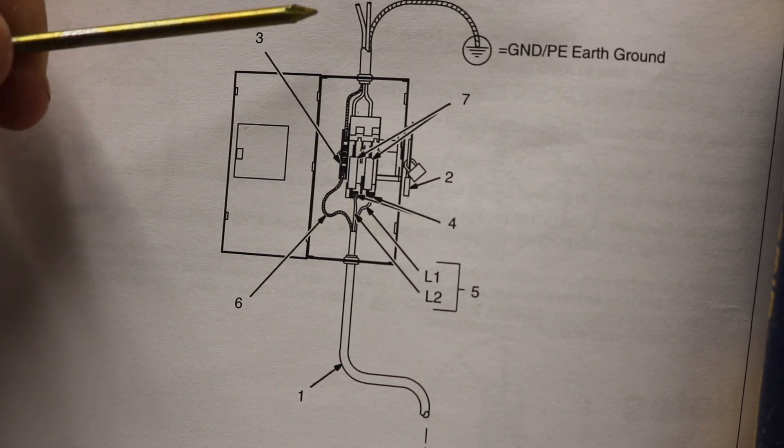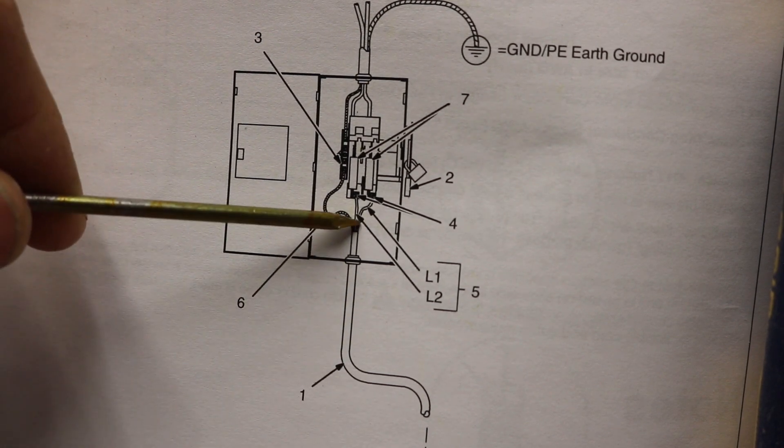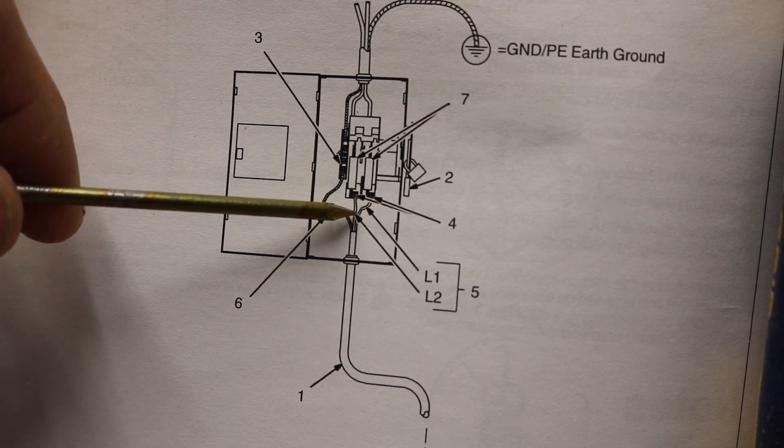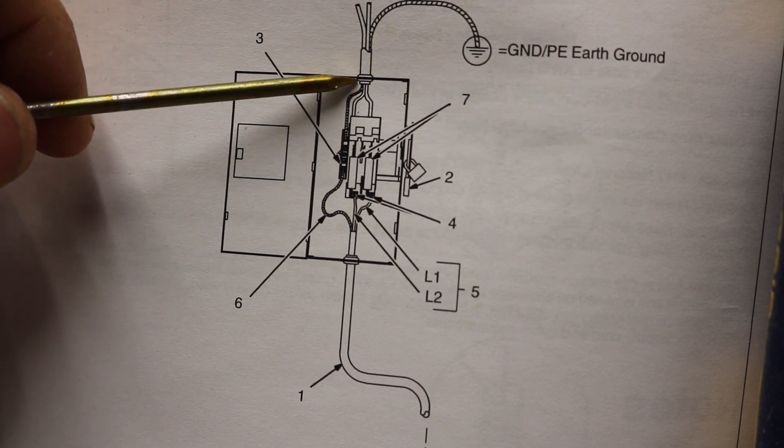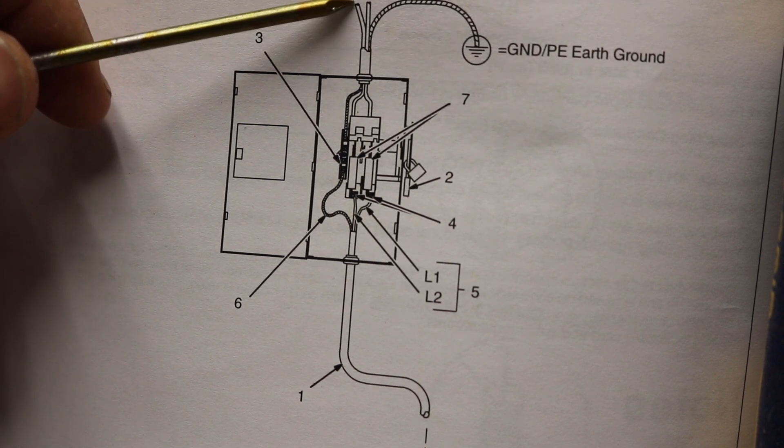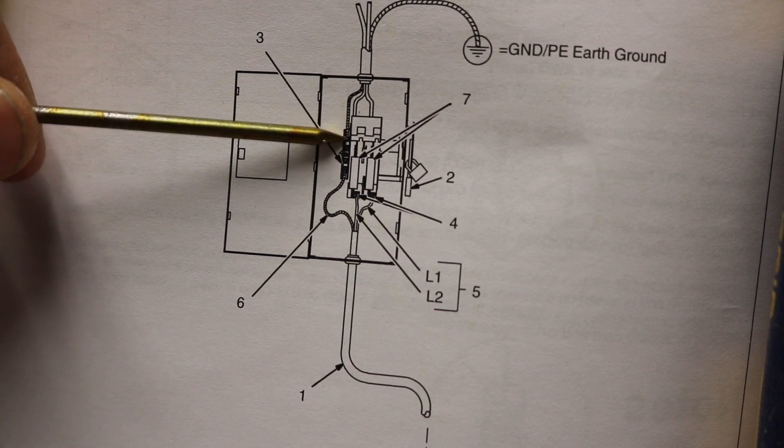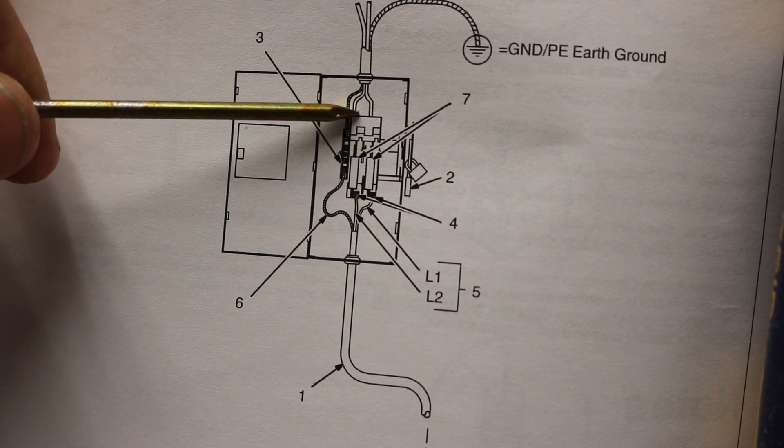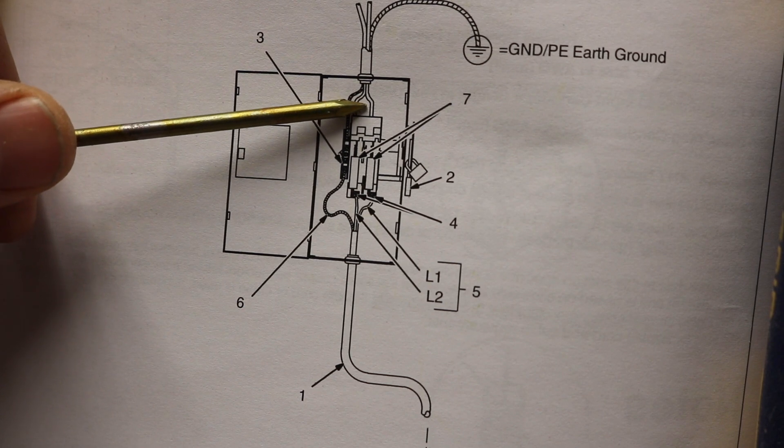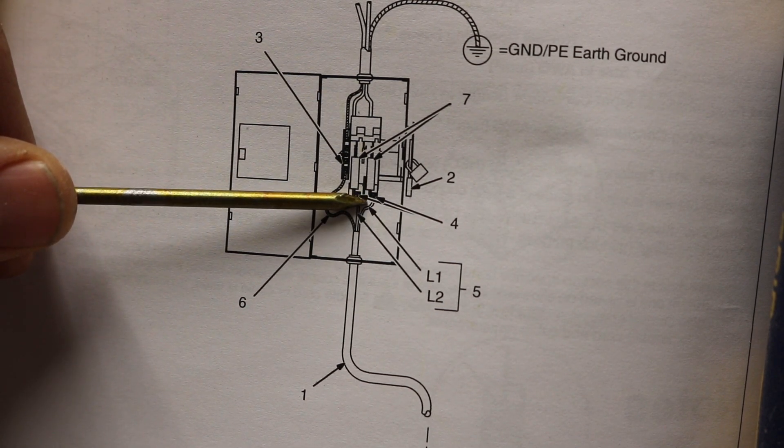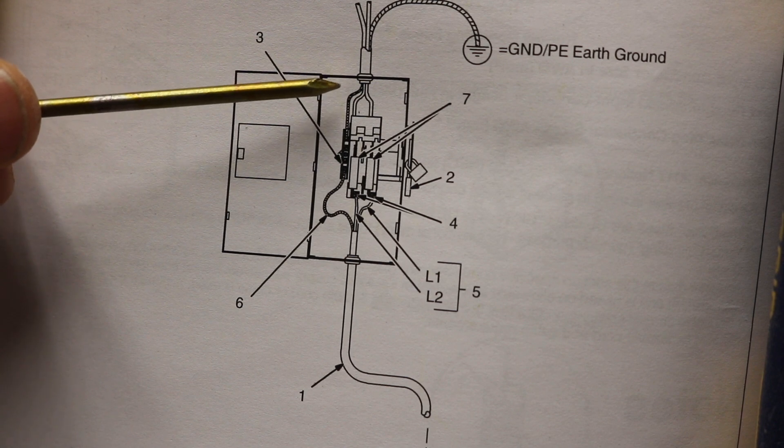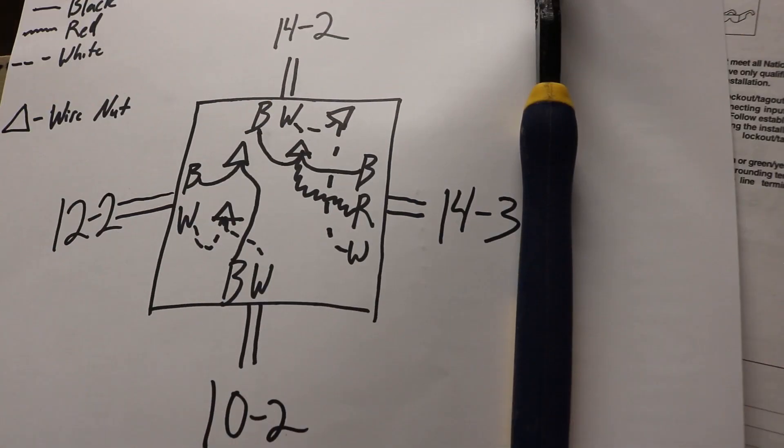When we ran this, we ran two hots. This had a black and a white because it's just SO cord. So that could confuse people because you think you just need a hot, a neutral, and a ground coming from the panel. But no, this L1 and L2 are two hots. So we ran a black and a red from the panel and then a green wire as your ground, and we hooked it up to a disconnect. The black went to the black wire on the SO cord, and then the red wire from the panel went to the white wire on your SO cord. So just know that colors don't always mean that it's a hot and a neutral.